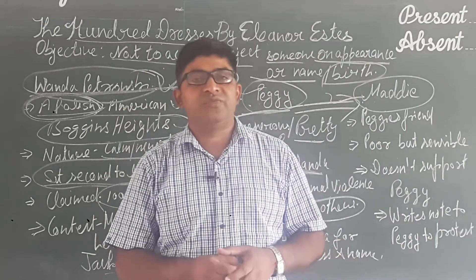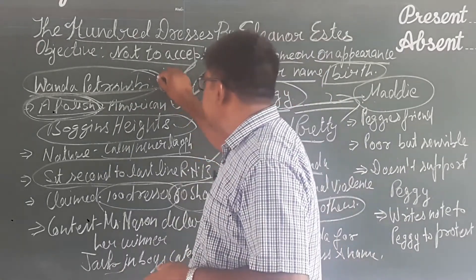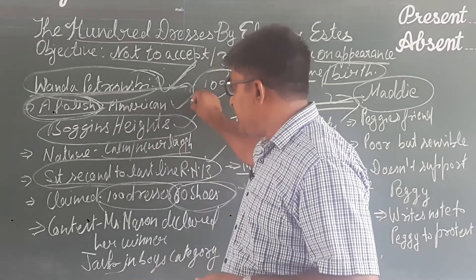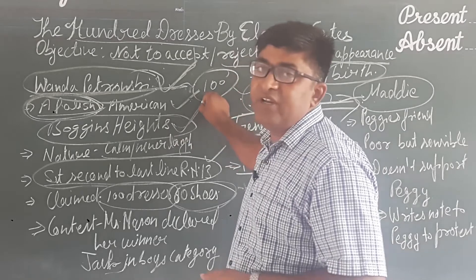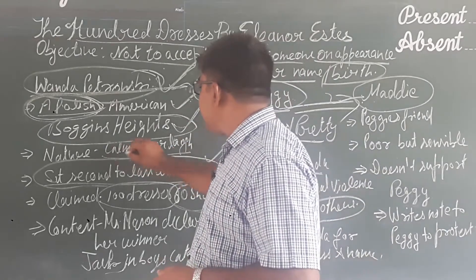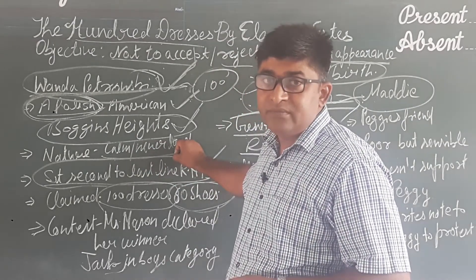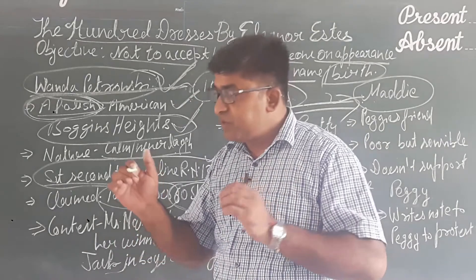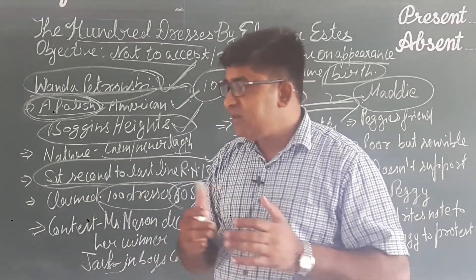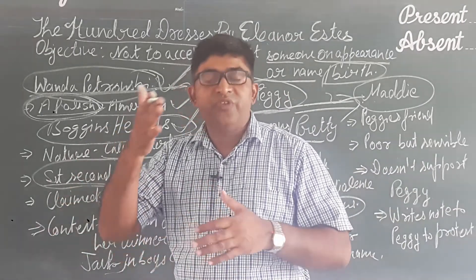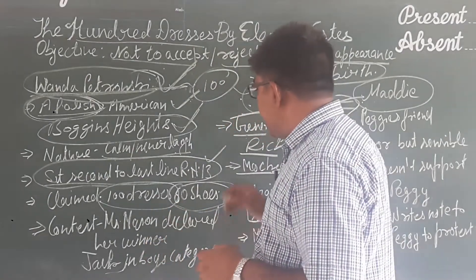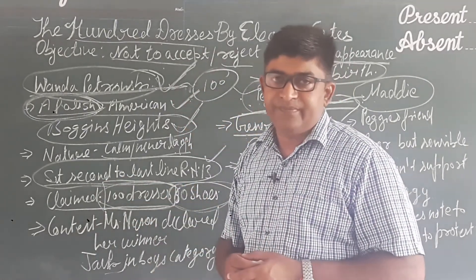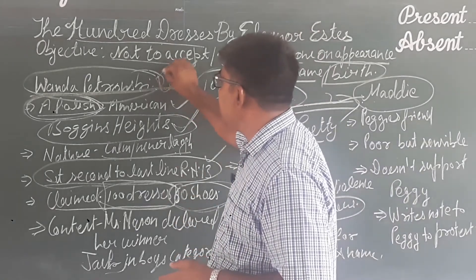Now let us discuss the question answers of this chapter. What kind of girl was Wanda Petronsky? Wanda Petronsky was a Polish girl who belonged to an immigrant family in America and lived at Boggins Heights, which was not a fine area. She was very calm and never laughed. The girl was very sensitive and used to sit at a particular place because she did not want to reveal her difficult conditions. She was also very talented and had prepared very beautiful dress designs. In totality, Wanda Petronsky was a very good girl.